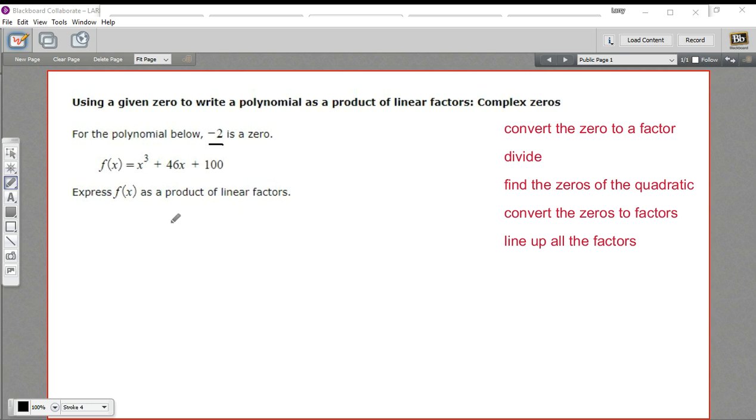And what we want to come up with at the end is this same function, but written as a product of all its factors. So all the factors lined up together and multiplied by each other. So how are we going to do this?